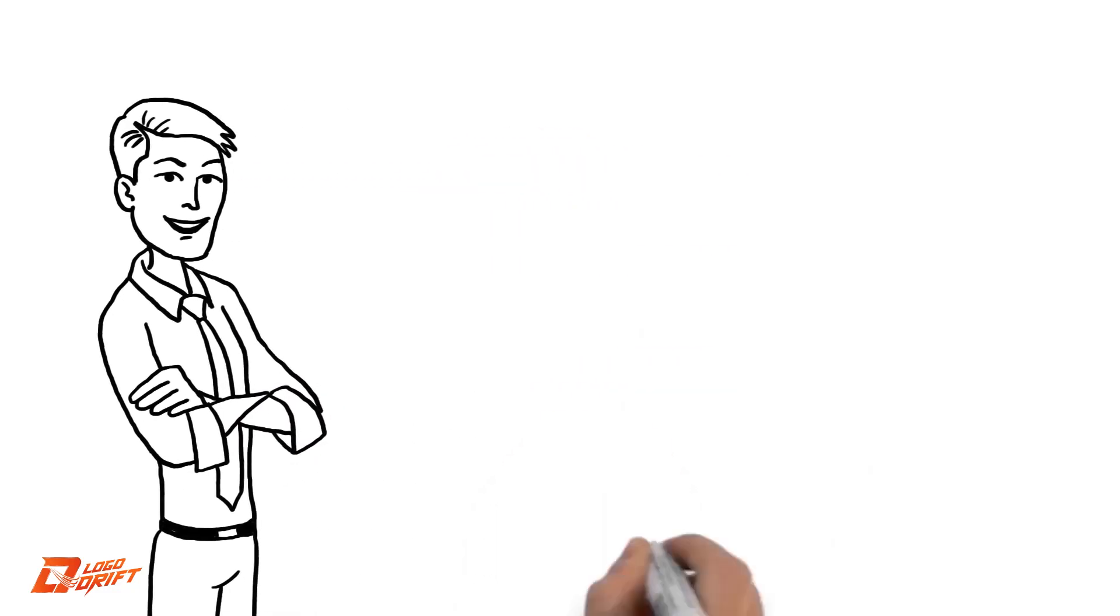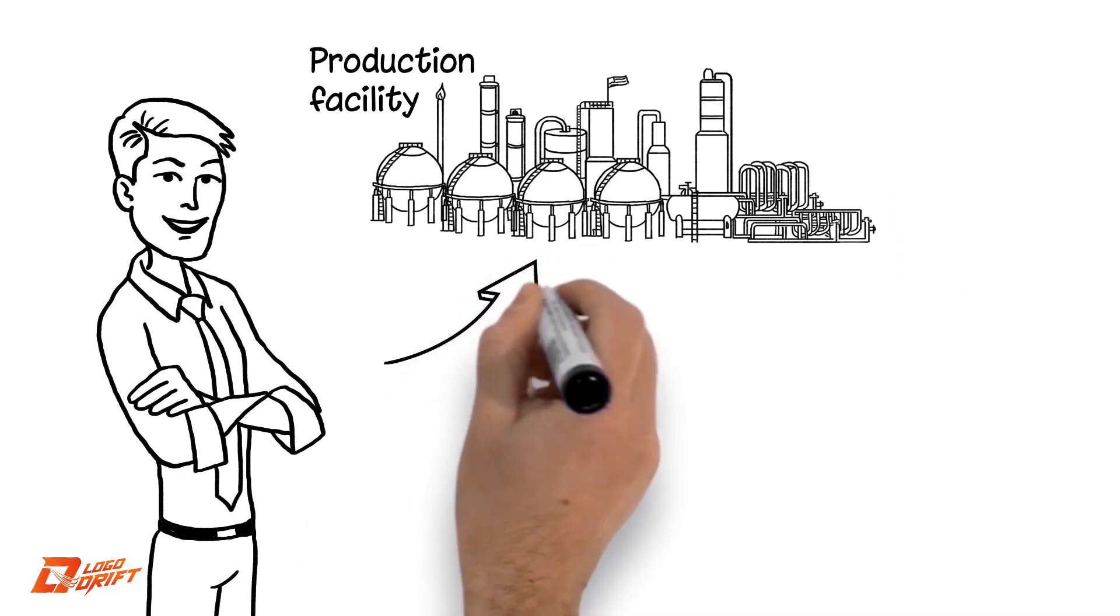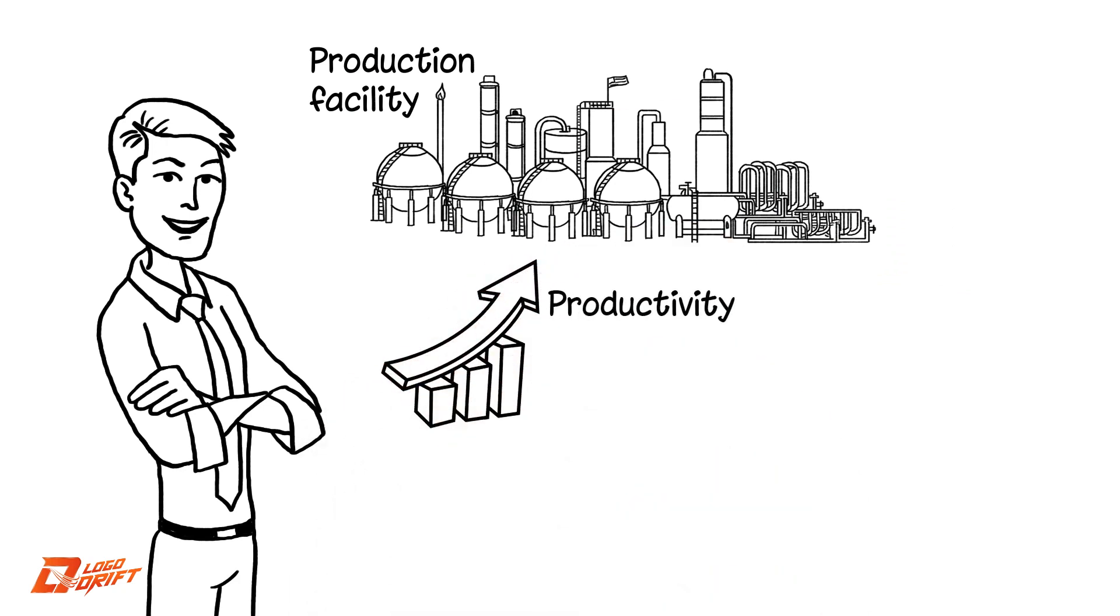This is Bob. He owns a production facility that's doing fine. But Bob's been trying to improve his productivity and efficiency and take things to the next level.